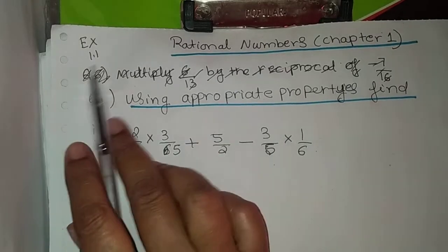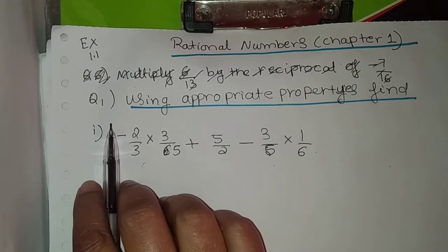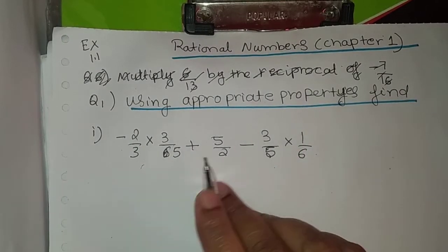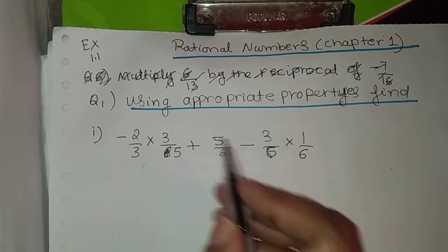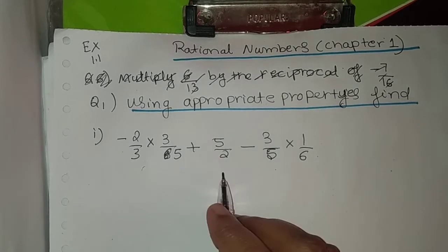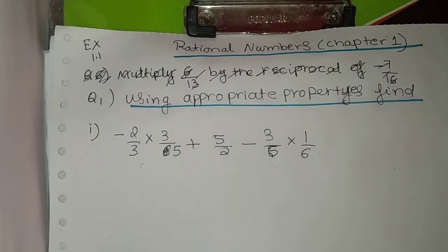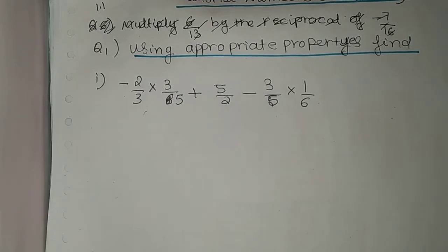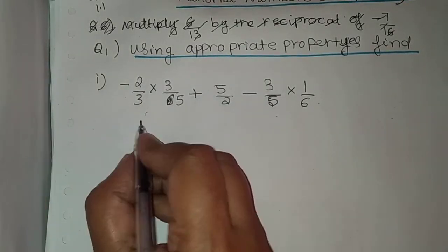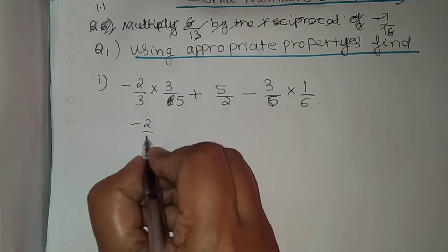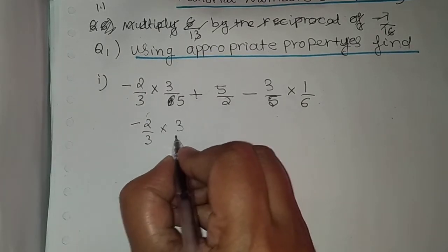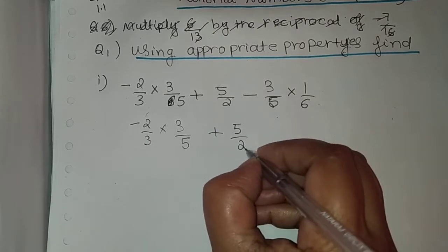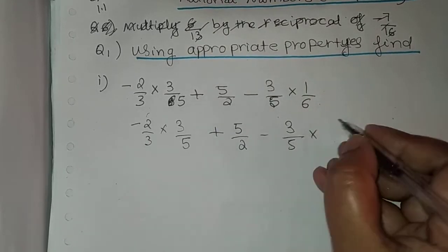Hello students, I am solving exercise 1.1, question 1 using the appropriate properties. This is on the request of a student. Previously I solved this problem without using properties. So the problem is given — we will write the problem once again: 2/3 × 3/5 + 5/2 - 3/5 × 1/6.